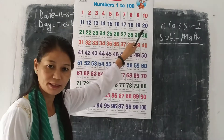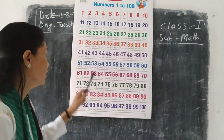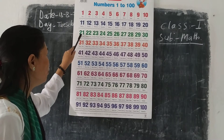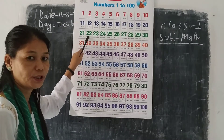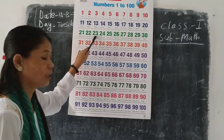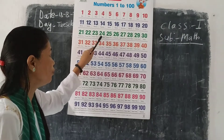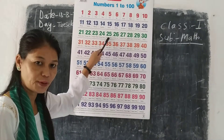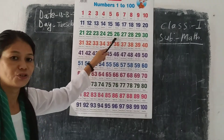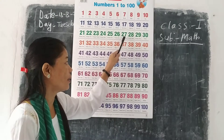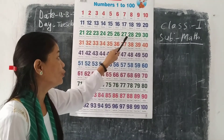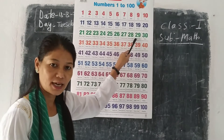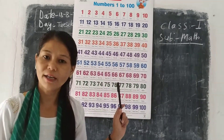This is below 20. Up next. Look here. 21, 22, 23, 24, 25, 26, 27, 28, 29, 30.